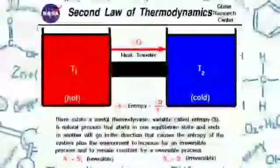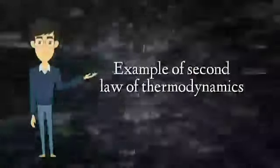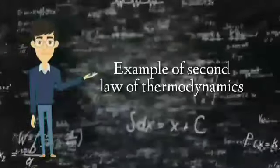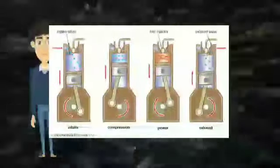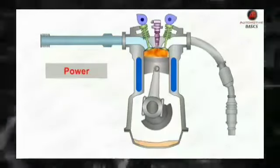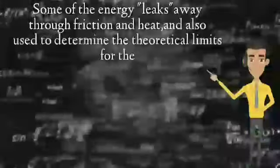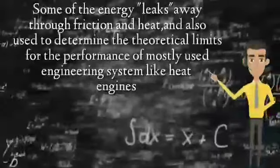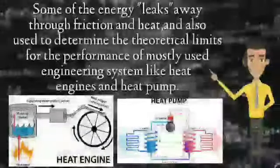The second law of thermodynamics states that the entropy of any isolated system always increases. An example of the second law of thermodynamics: when a diesel engine turns a generator, the engine's mechanical energy is converted into electricity. The electricity is still pretty concentrated, but not all of the mechanical energy is converted to electricity. Some of the energy leaks away through friction and heat, and is also used to determine the theoretical limits for the performance of commonly used engineering systems like heat engines and heat pumps.